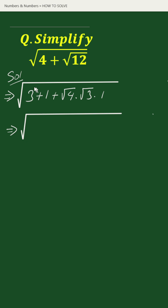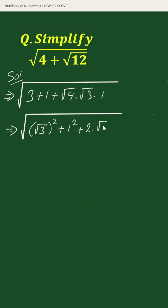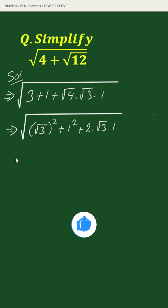Now 3 can be written as square root of 3 whole square, and 1 can be written as 1 square, plus square root of 4 is 2, times square root of 3 times 1. Now this is of the form...